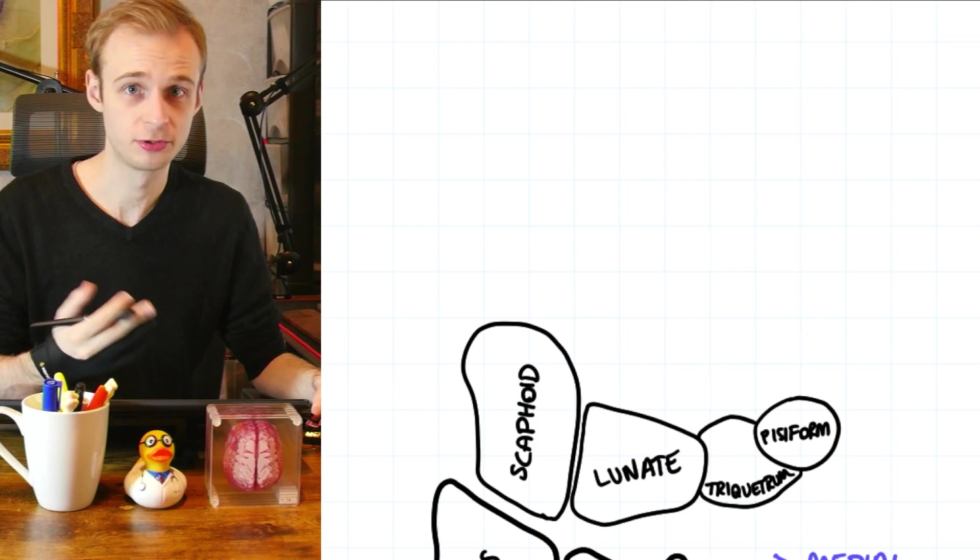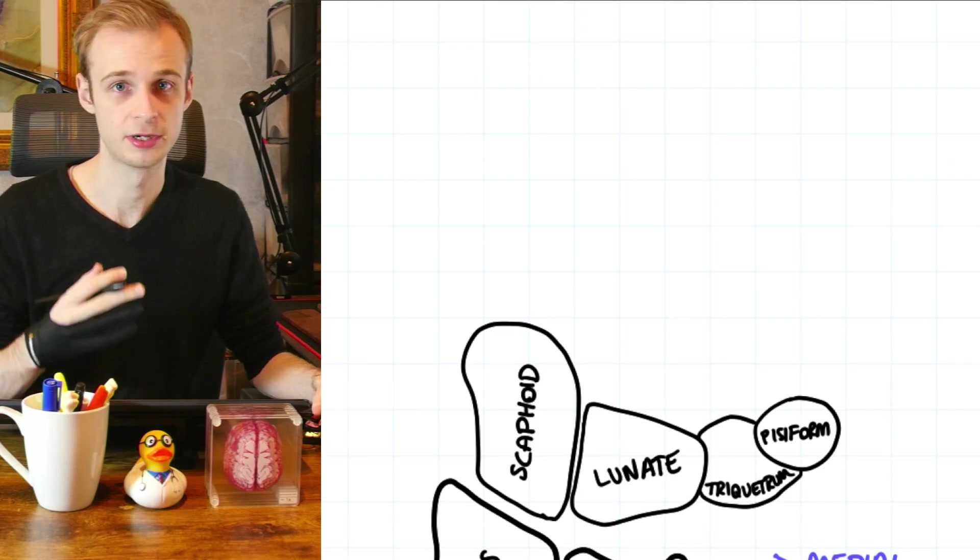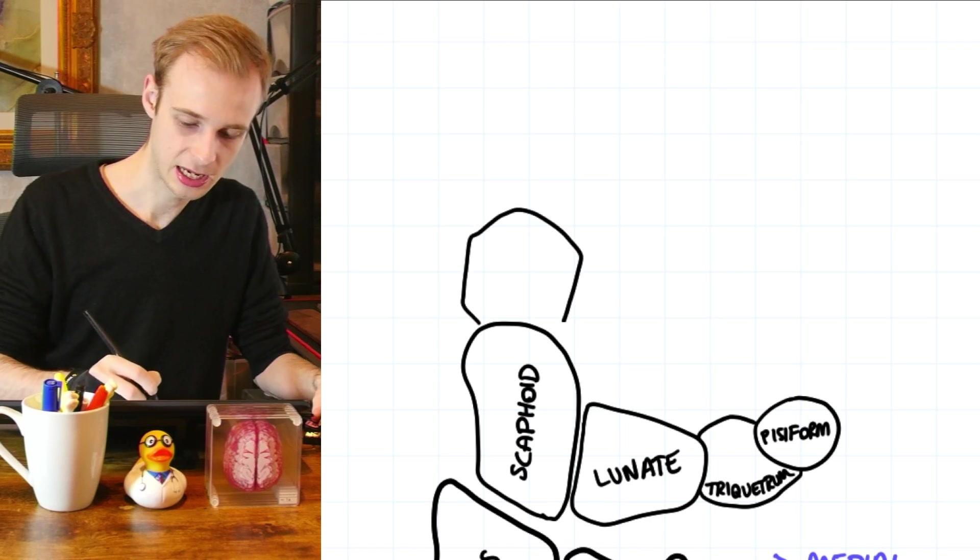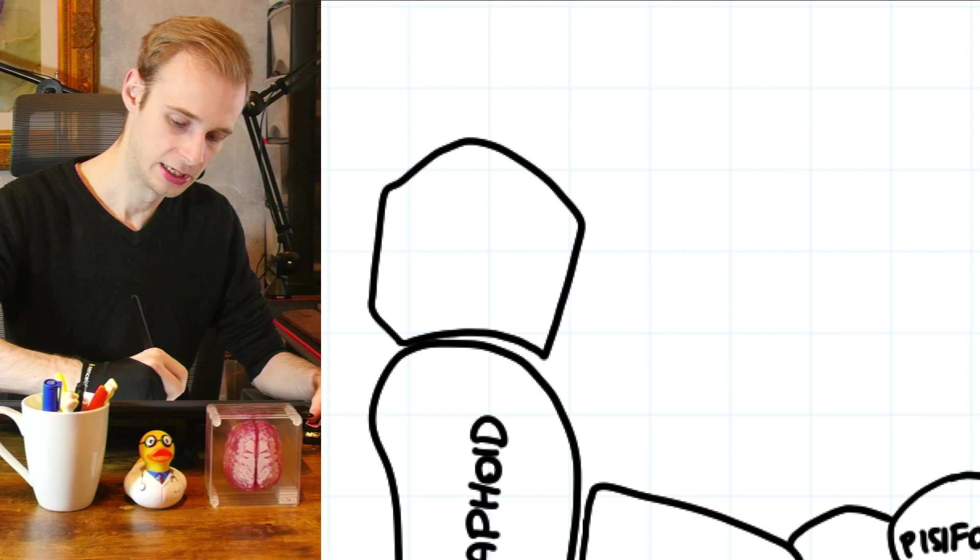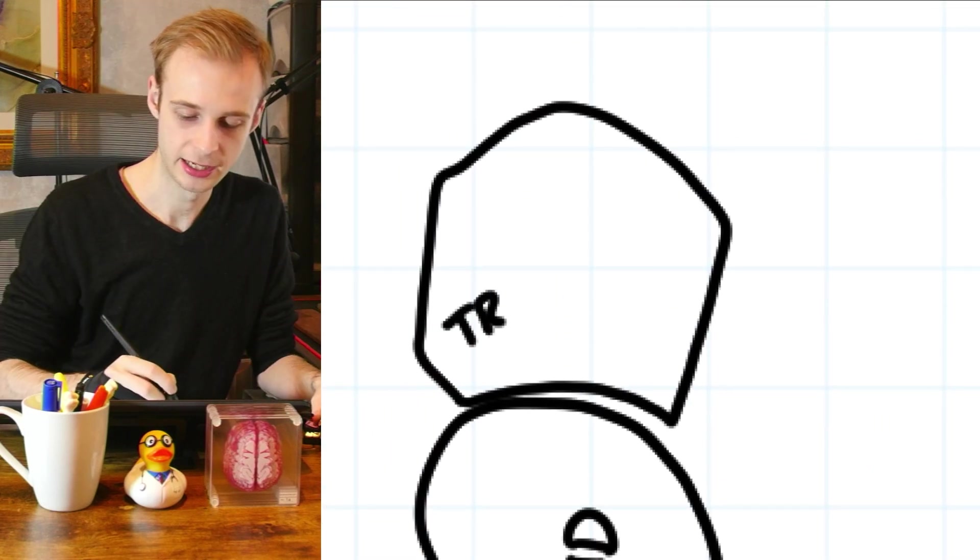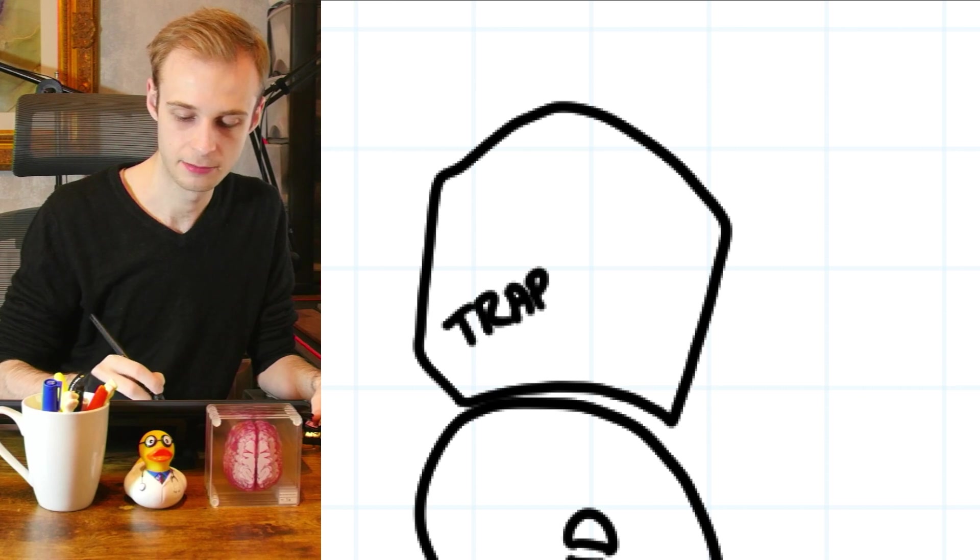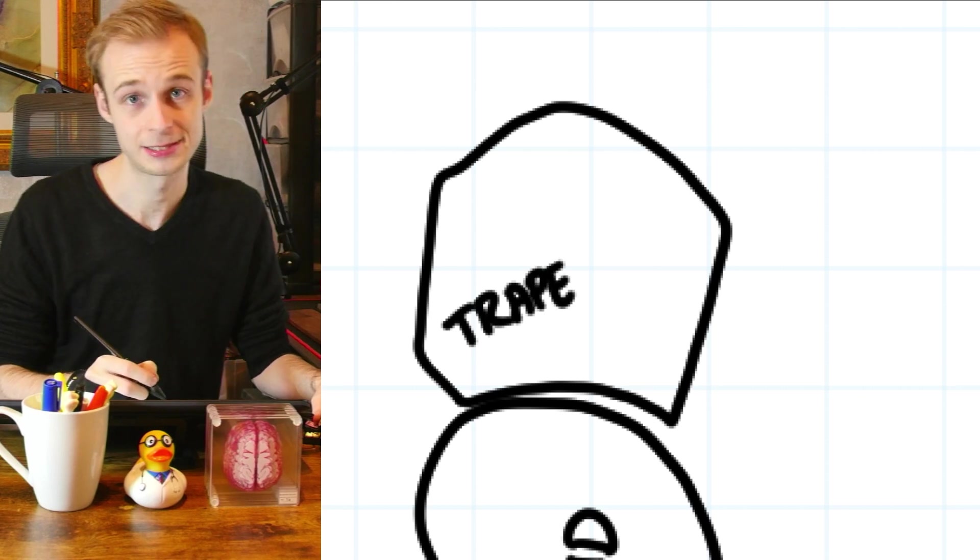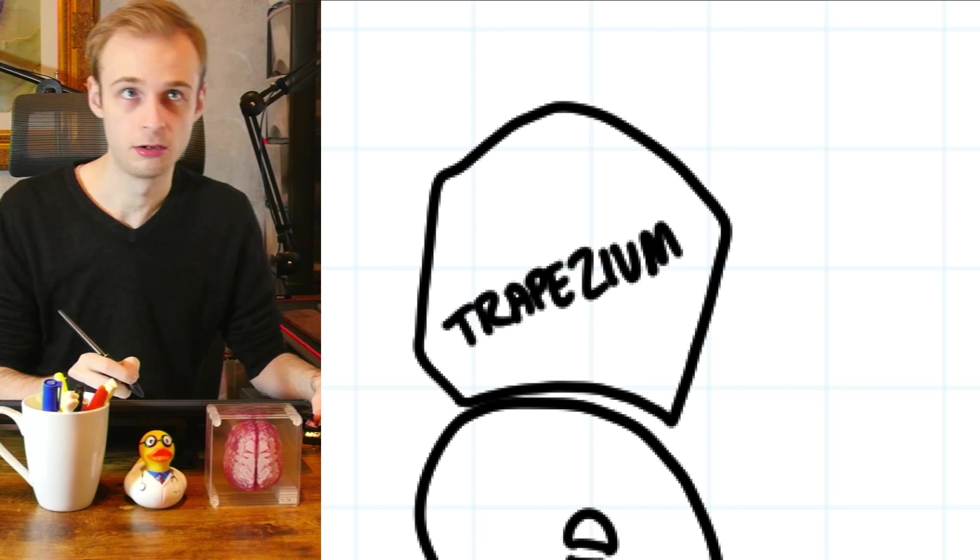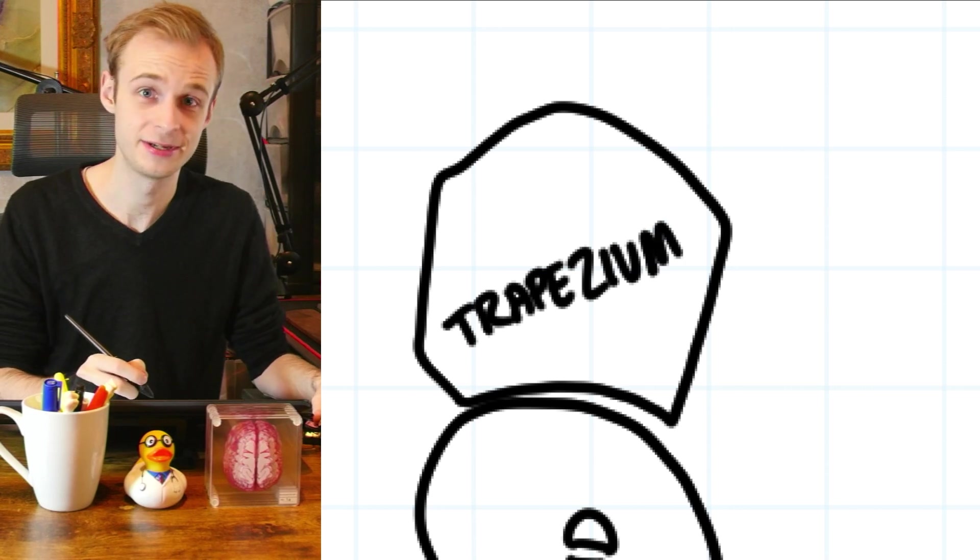So that's the proximal row, the first four of the carpal bones. We now need to complete the next four for the distal row. Now articulating with scaphoid in the most lateral aspect is a bone called trapezium. Now trapezium is not Latin, it's ancient Greek and it comes from trapezion which if I recall correctly means little table.